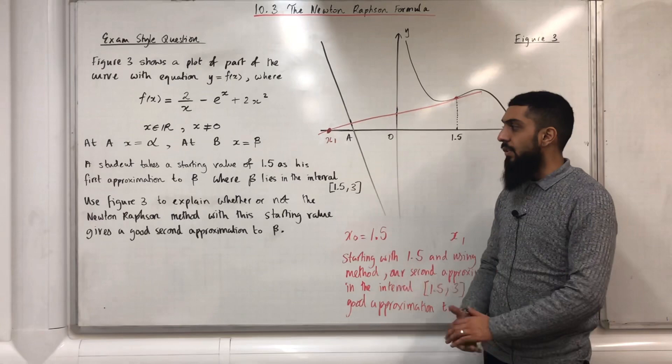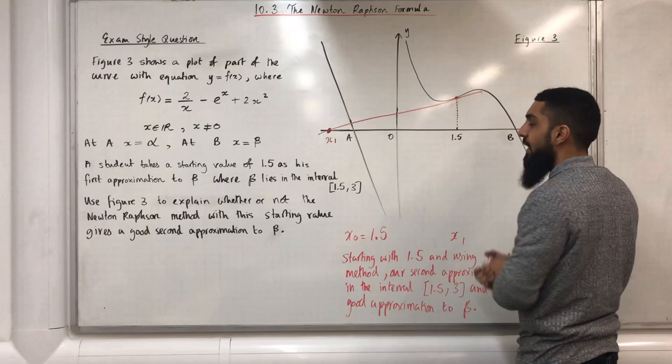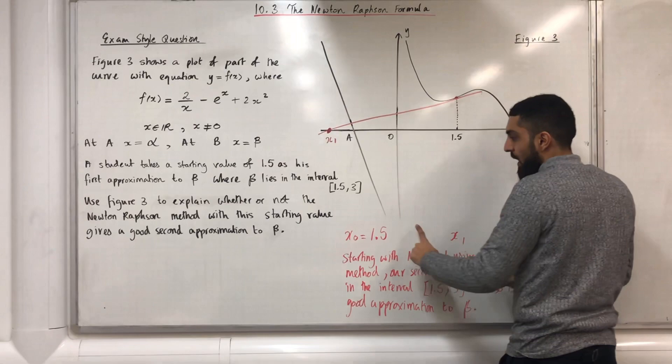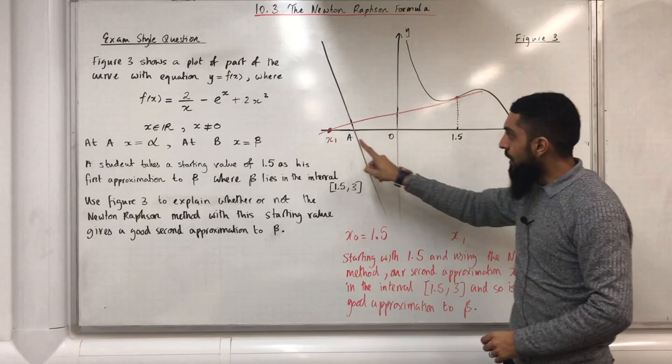Use figure 3 to explain whether or not the Newton-Raphson method with this starting value gives a good second approximation to beta. So, we have to use figure 3. Our first step is to start off with the value 1.5. So, 1.5 is here. We can label that as x0. Now, the next step is to draw a tangent to the curve y equals f(x) at the point x0 equals 1.5. So, here is my tangent drawn.